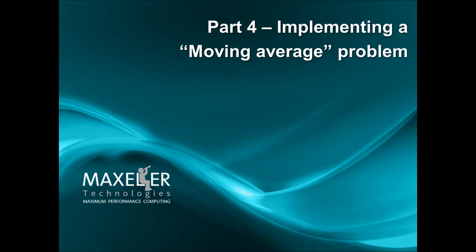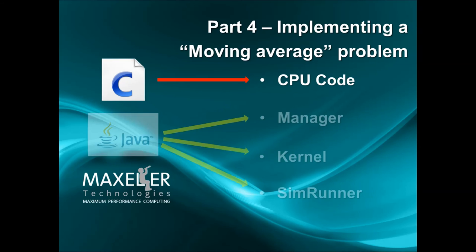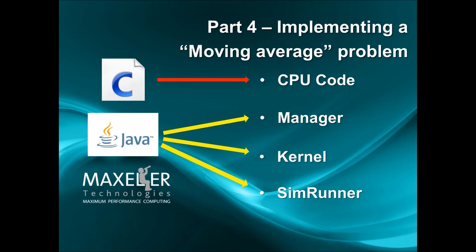In part four we will implement a moving average problem. If you haven't heard about it, it is a simple array manipulation problem which will illustrate how we will write more complex data flow programs. We will write the CPU code and all other parts mentioned in parts two and three.